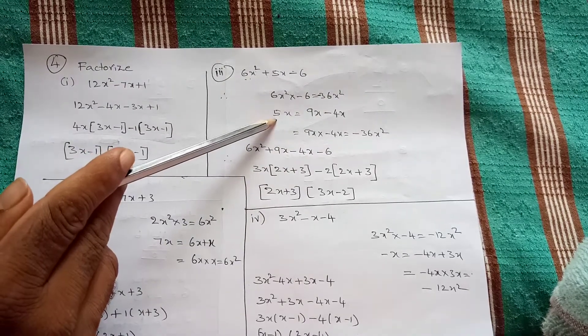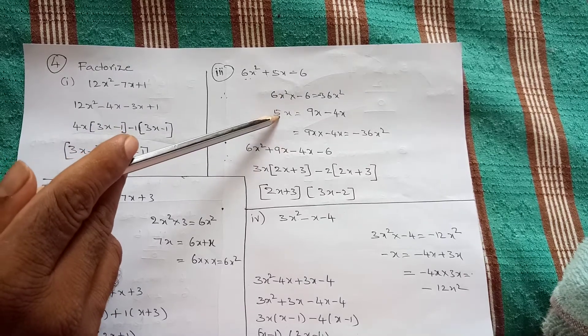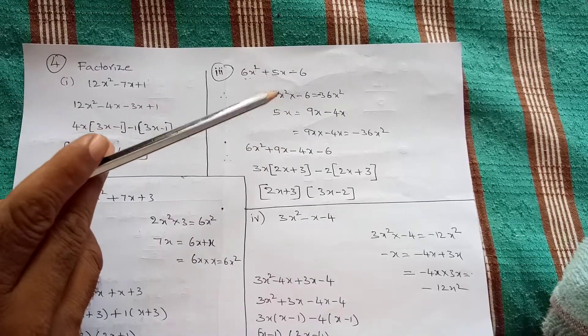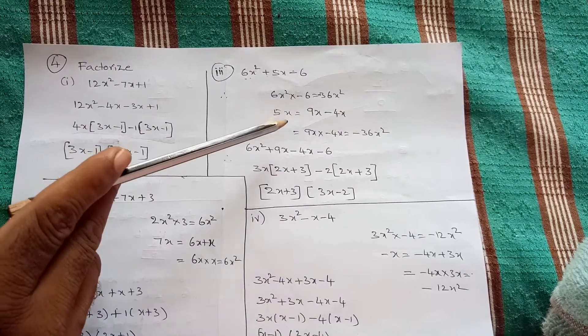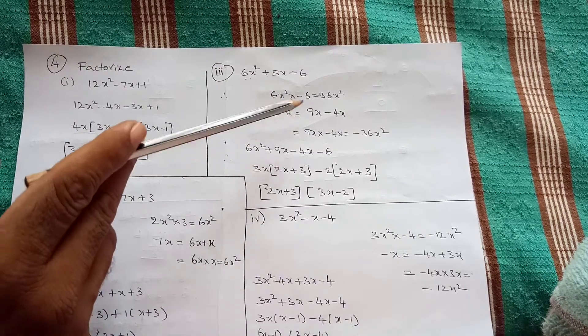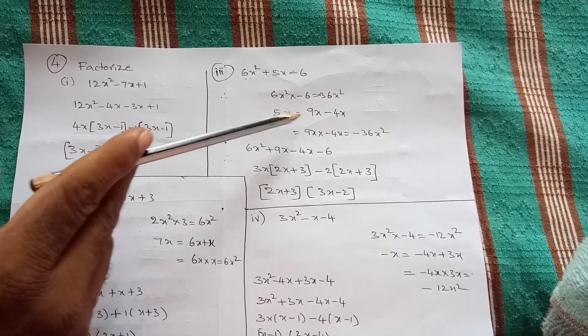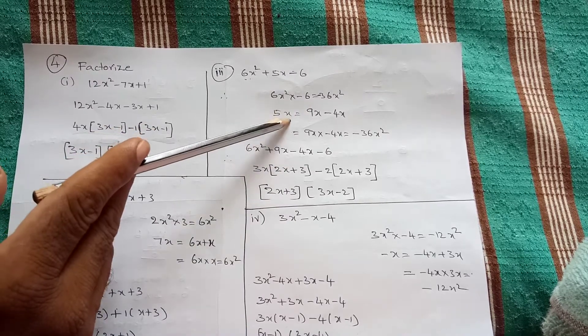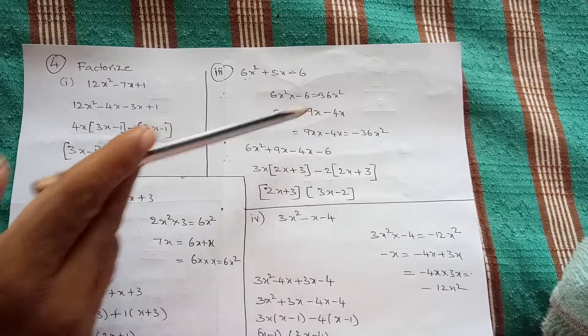Take middle term 5x. Now, 5x can be written in any way but which should give minus 36 on product of the two terms. Likewise we have to split 5x into 9x minus 4x.